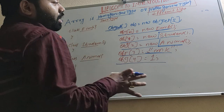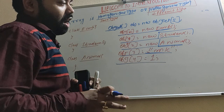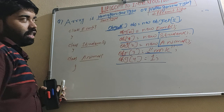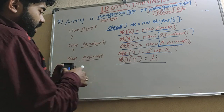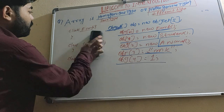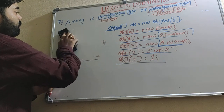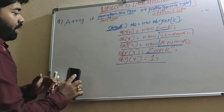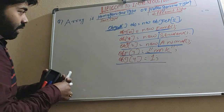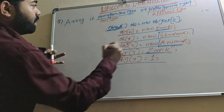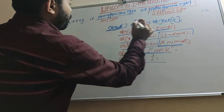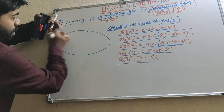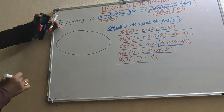If you want to store different types of data, then we should go for an Object type array. Internally, one object is created and we have given the location size as 5. This behavior is called heterogeneous type.